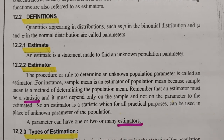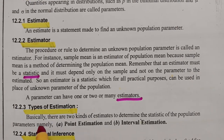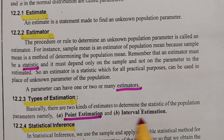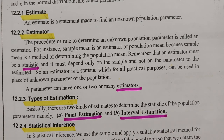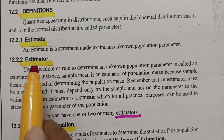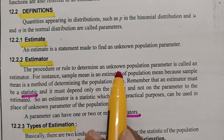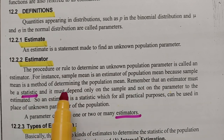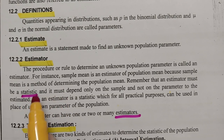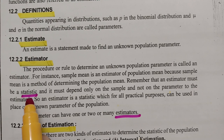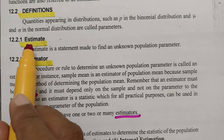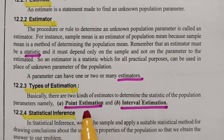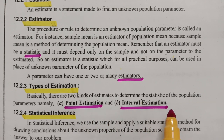There are two kinds of estimation to determine the statistics of the population. The first is point estimation and the second is interval estimation. An estimator is the process or rule to determine the unknown parameter using a statistical measure — whether variance, standard deviation, or mean. An estimate is a guess. And there are two types of estimation: point estimation and interval estimation. What is statistical inference? In statistical inference, we use the sample and apply suitable statistical methods to draw conclusions about the unknown properties of the population.